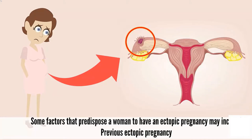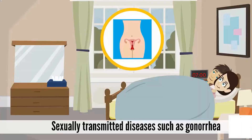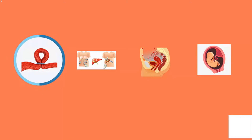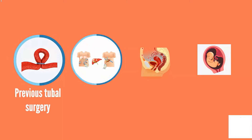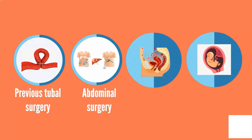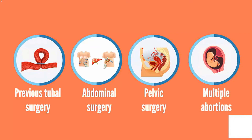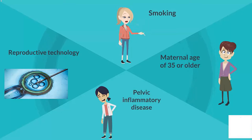Apart from that, sexually transmitted diseases such as gonorrhea, previous tubal surgery, abdominal surgery, pelvic surgery, and multiple abortions can be causes of ectopic pregnancy. Besides that, the use of reproductive technology, smoking, maternal age of 35 or older, and pelvic inflammatory disease can also cause ectopic pregnancy.